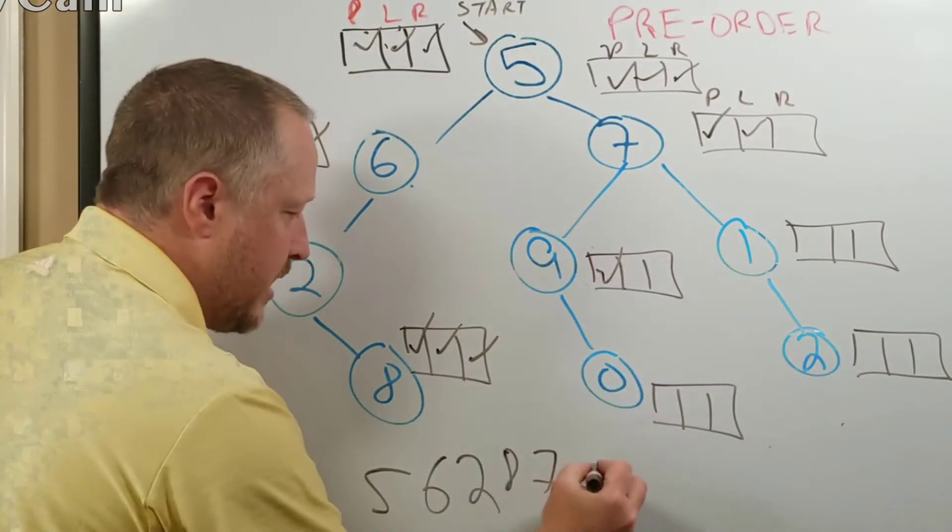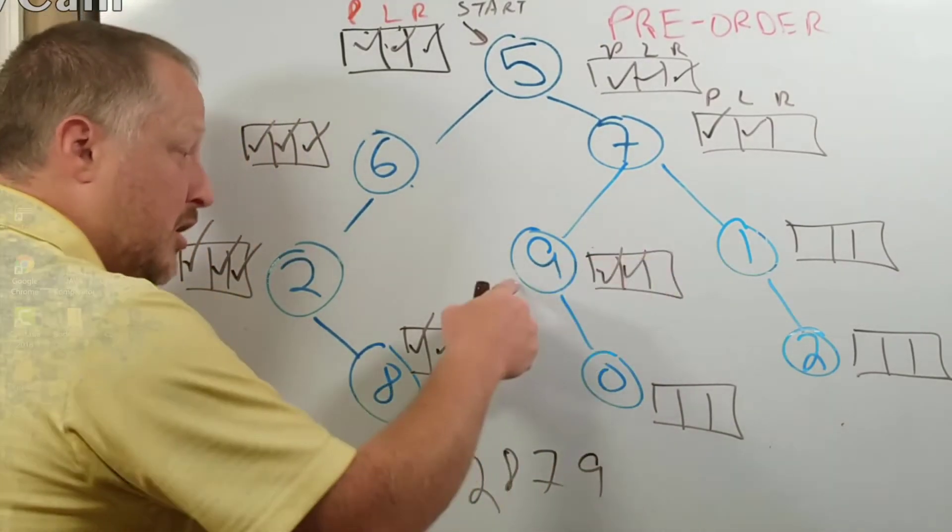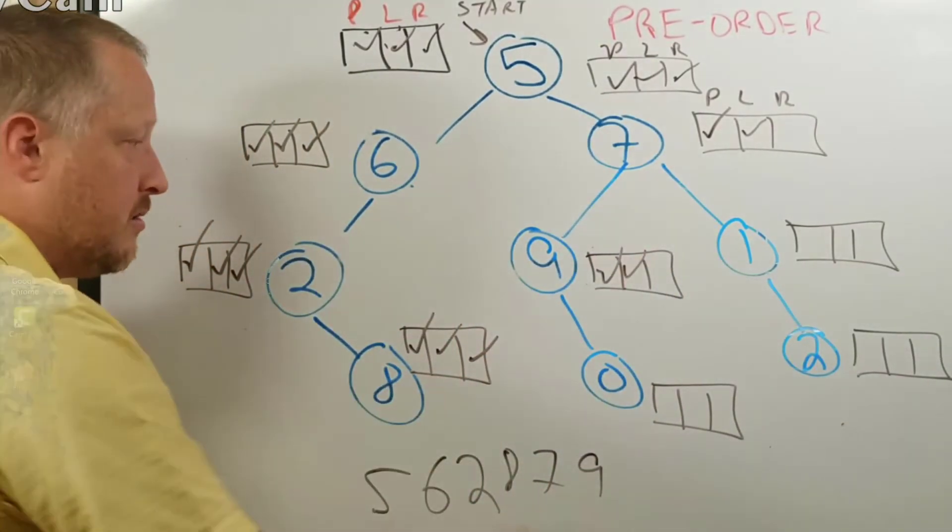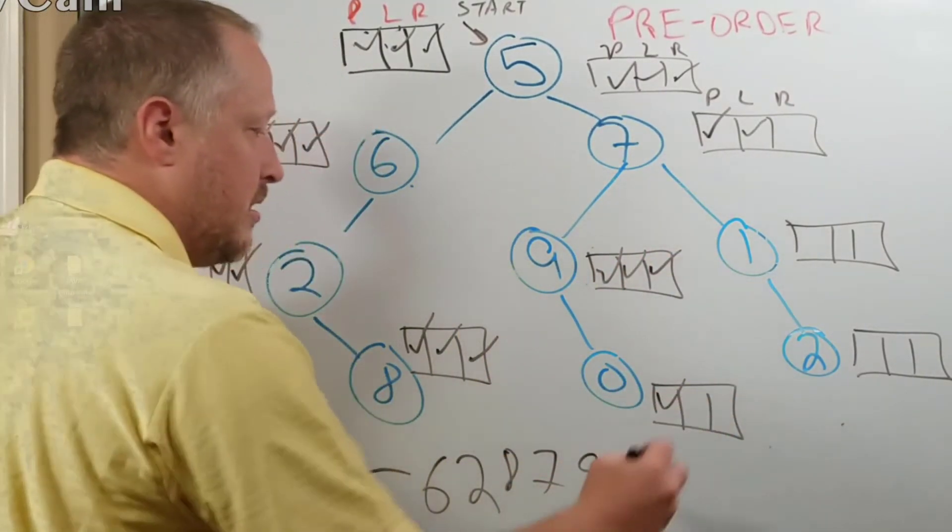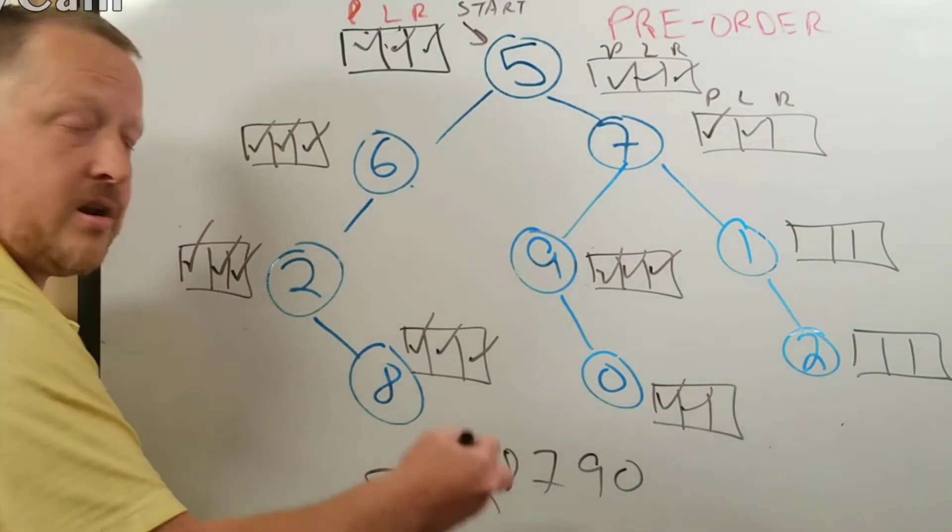Nine, I'm going to go ahead and process. I'm going to try to go left, but there's nothing there. I'm going to go ahead right. At zero, I'm going to process. I'm going to try to go left, but there's nothing there.